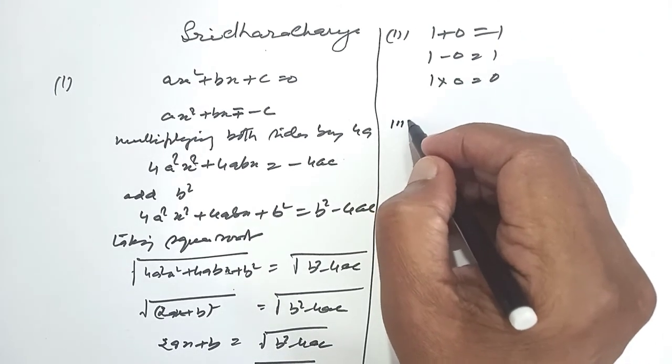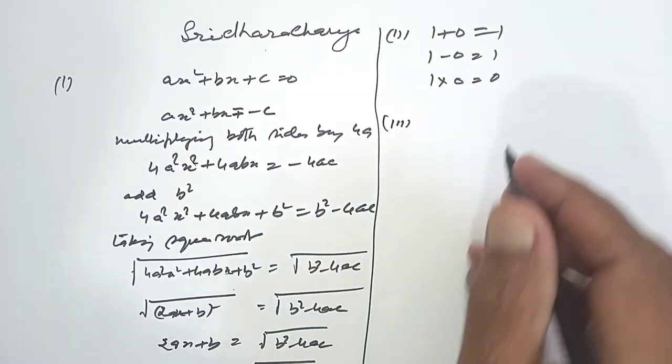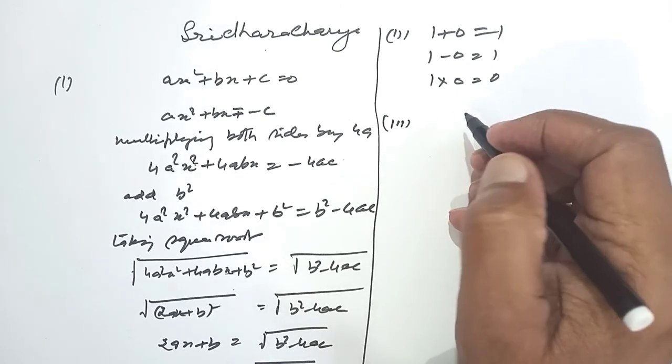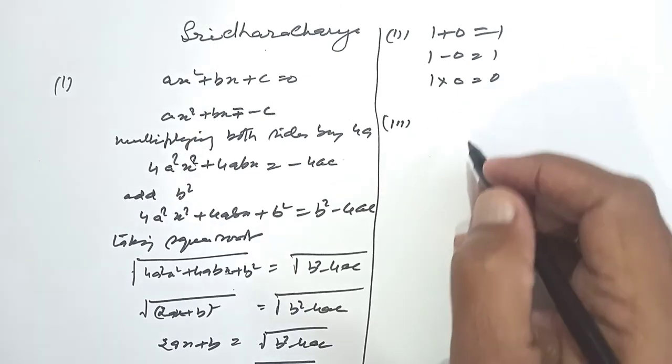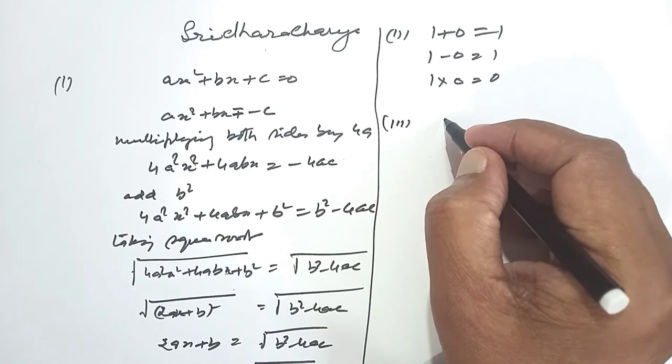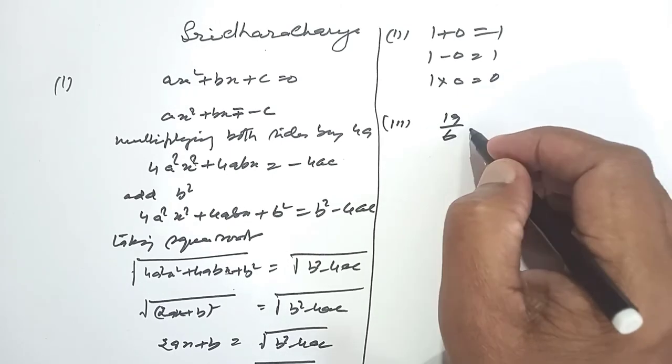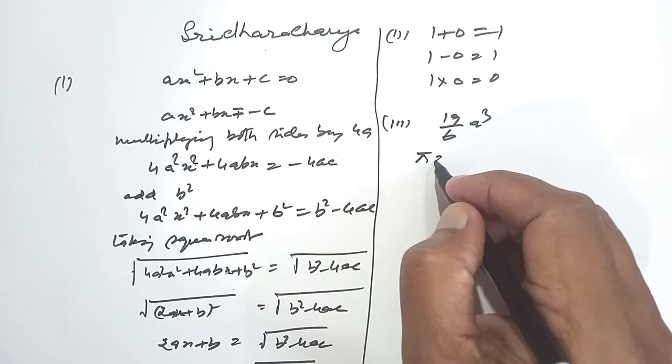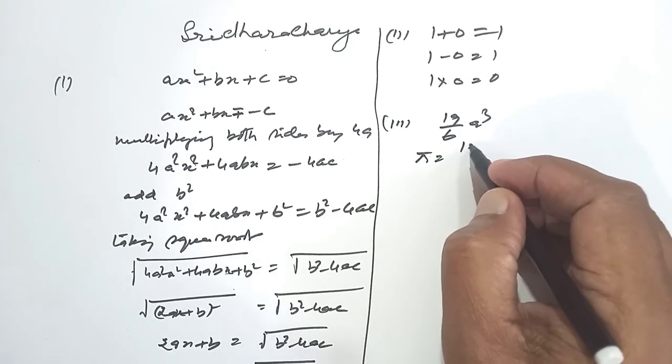Third point, he gave us for the first time the formula for finding the volume of a sphere as 19/6 × a³, where he took the value of pi as 19/6.